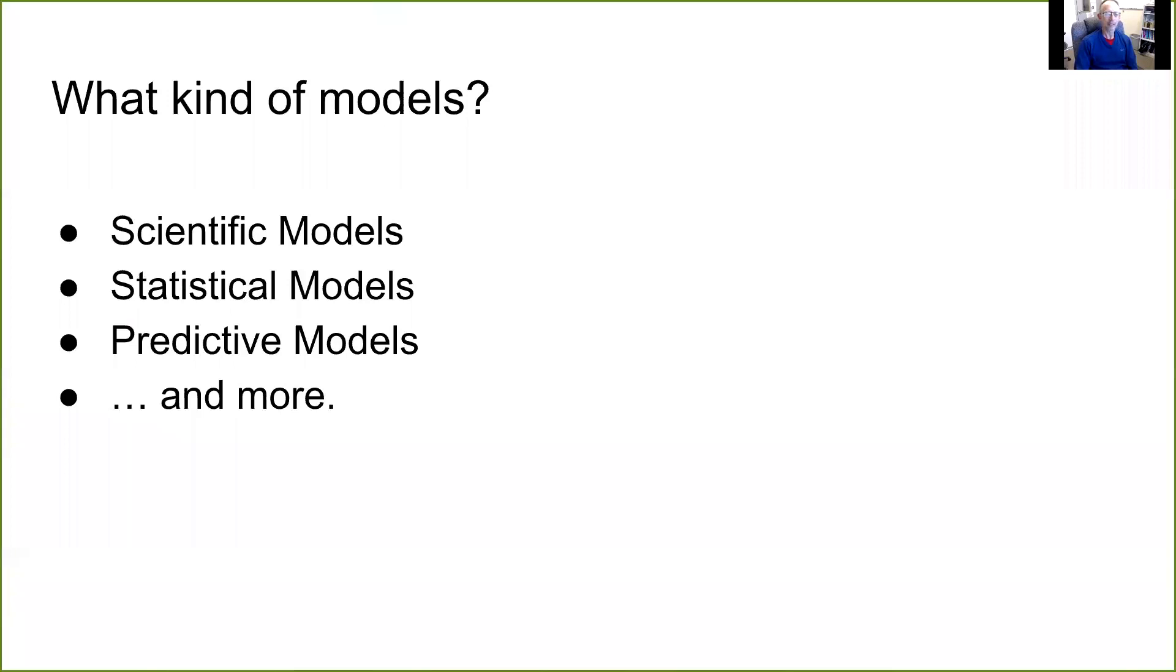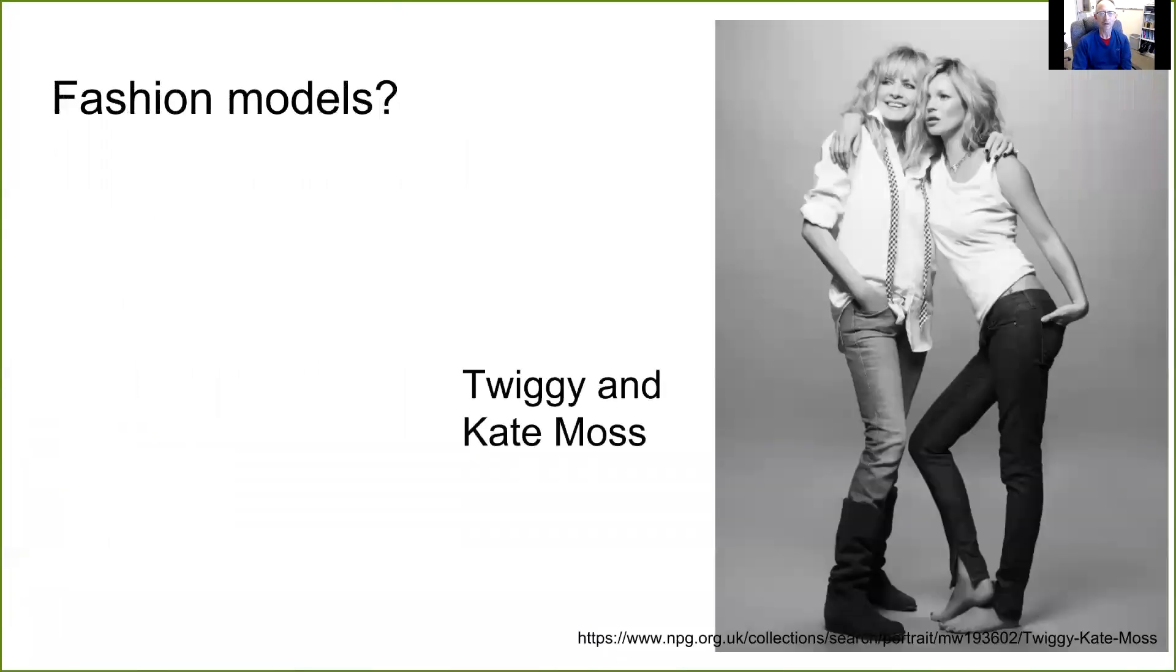So what kind of models are we talking about? You've probably heard of scientific models, perhaps statistical models, and of course in this course and others predictive models. But there are more definitions and the word is commonly used and perhaps ambiguously used. So again, I thought it would be worthwhile and maybe fun to delve into those meanings. Well, here are two models, fashion models. Twiggy was a famous model of the 1960s and 70s. Kate Moss quite a bit younger but probably quite a bit older than some of you. In any case, models are humans who model clothes for other humans. So they kind of substitute for the people that clothes are supposed to be sold to.